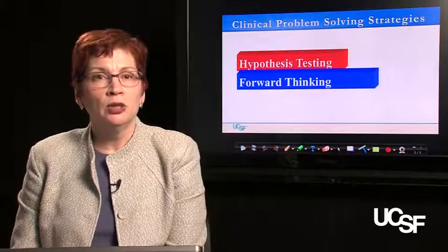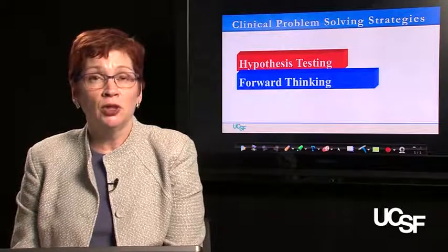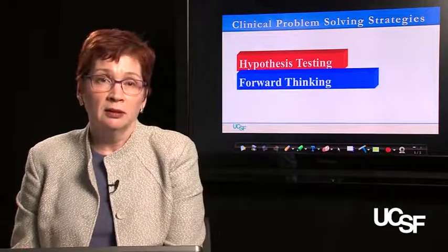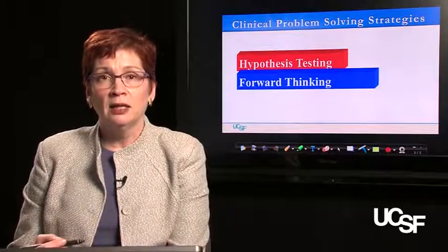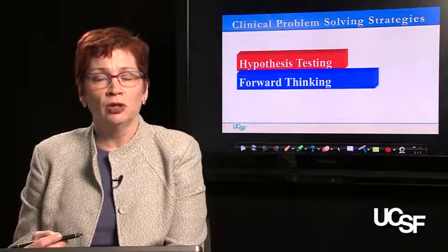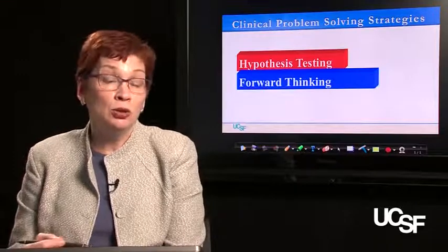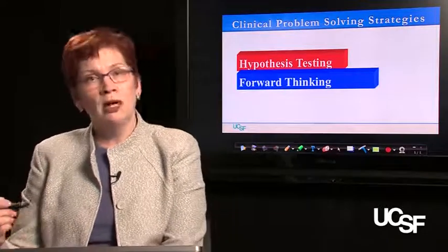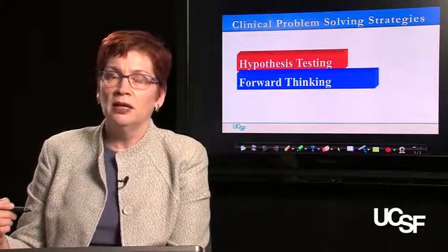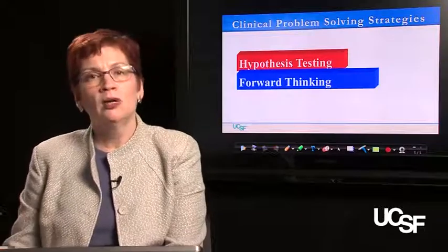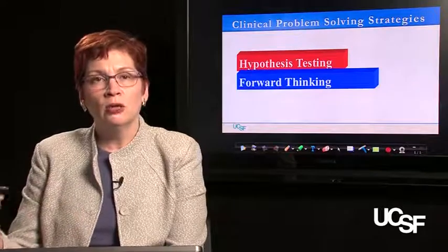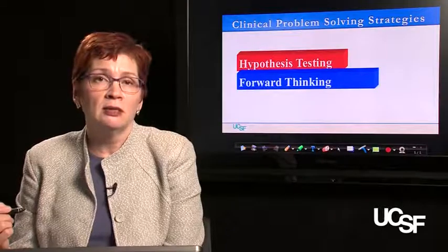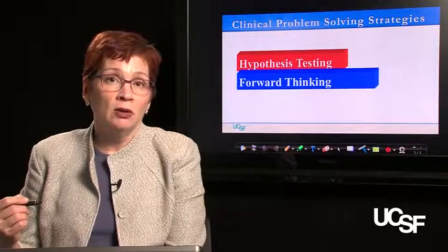In contrast, forward thinking uses a branch chain algorithm to sequentially narrow the differential diagnoses by accumulating more precise information about the patient's initial complaint. For example, with low platelets, the clinician asks: is this due to decreased production or increased destruction? If destruction, is there a coagulopathy or not? If there is a coagulopathy, is it associated with other symptoms like fever or confusion? Working through this branch chain either-or sequence refines and decreases the number of differential diagnoses to consider before identifying one to focus in on.